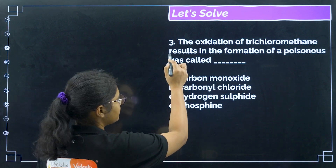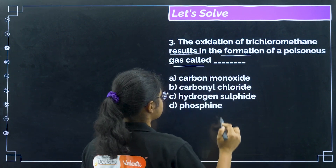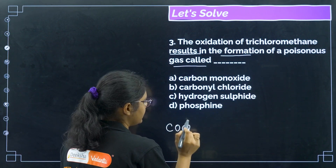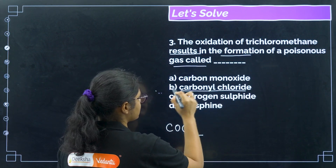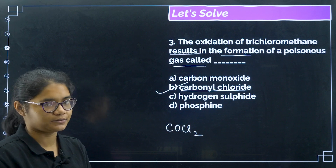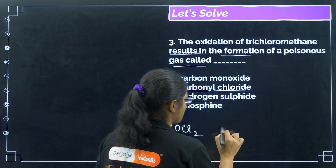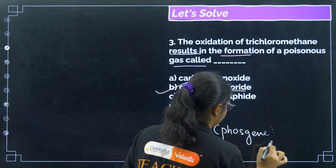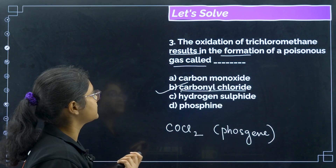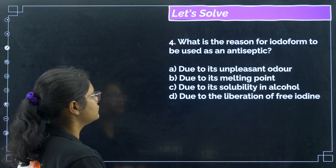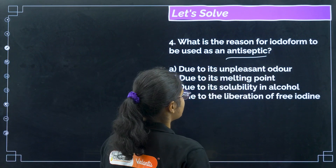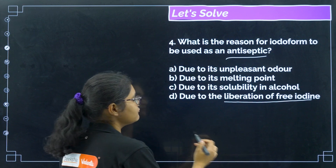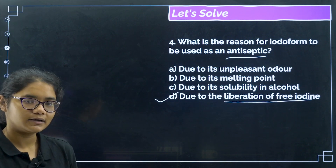Question 3: the oxidation of trichloromethane results in the formation of a poisonous gas called? The gas is COCl₂, called carbonyl chloride. The correct answer is option B. The common name is phosgene — P-H-O-S-G-E-N-E. Question 4: what is the reason for iodoform to be used as an antiseptic? It is used due to its ability to liberate free iodine. Correct answer is option D.